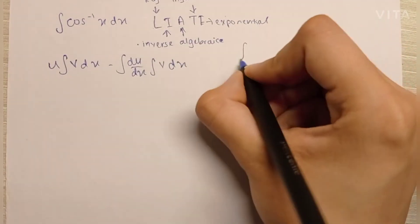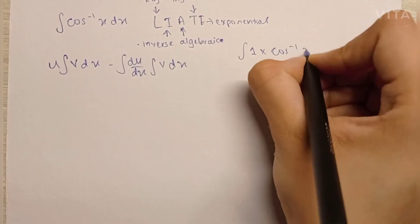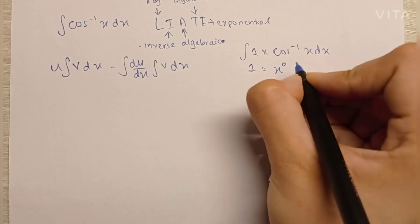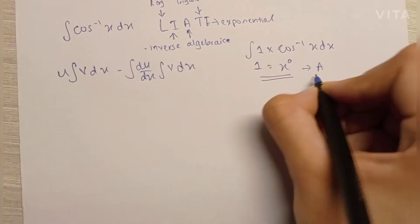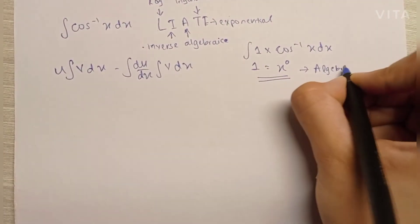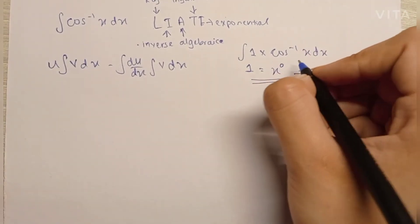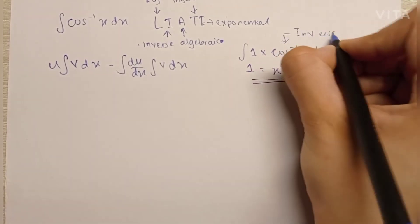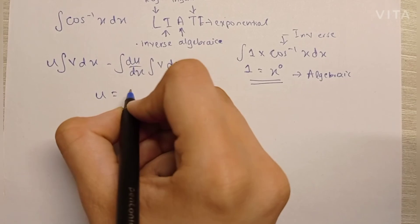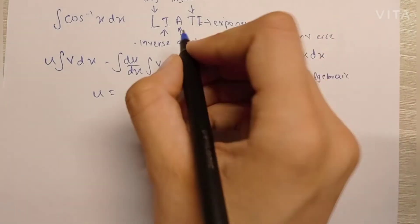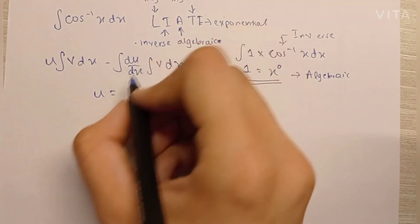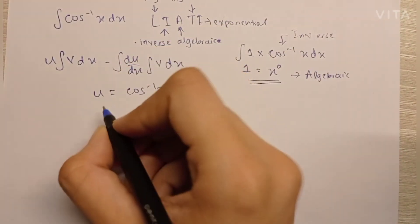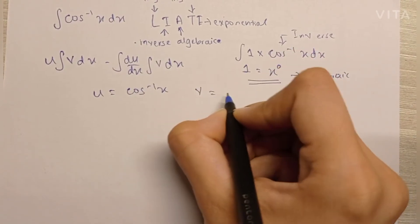So here we have two terms: 1 into cos inverse x. I can write 1 as x raised to 0, and thus call this my algebraic term. We can clearly see that cos inverse x is the inverse trigonometric term. Since inverse comes before algebraic in the LIATE rule, the inverse term becomes u — that is, cos inverse x becomes the u term.